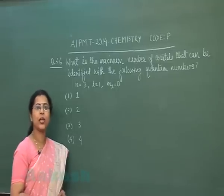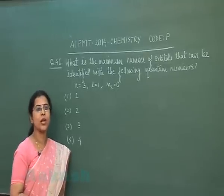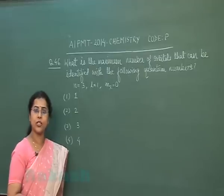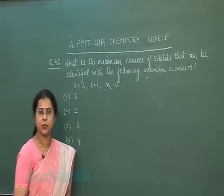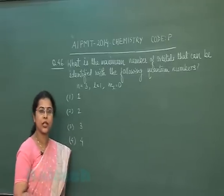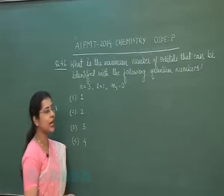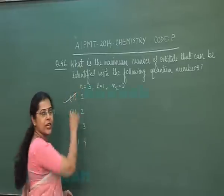As you know, any orbital requires three quantum numbers for its description, and an electron requires four quantum numbers for its description. Since the question is related to orbitals, the correct answer should be 1.